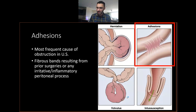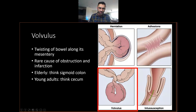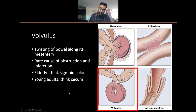Adhesions are fibrous bands resulting from prior surgeries or inflammatory processes — not a lot to say about them, but they can lead to obstruction. Volvulus is twisting of your bowel — a rare cause of obstruction. In elderly patients, think sigmoid colon; in young adults, think cecum.